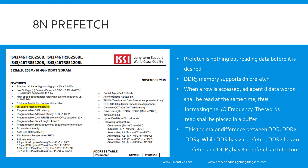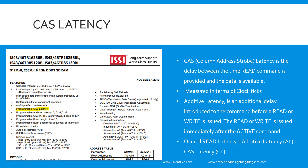We are increasing, indirectly, the I/O frequency — this is nothing but the prefetch mechanism. DDR3 supports 8n prefetch, and this is a very important parameter that differentiates the different DDR generations.